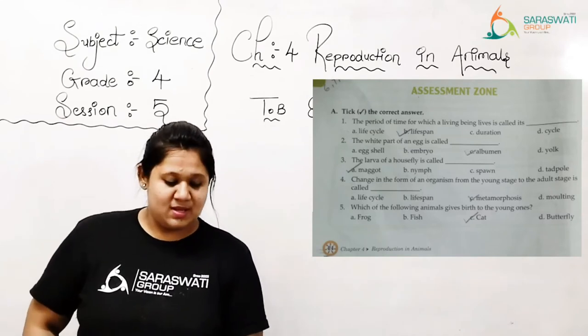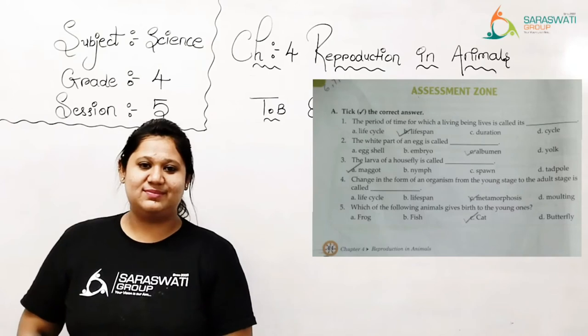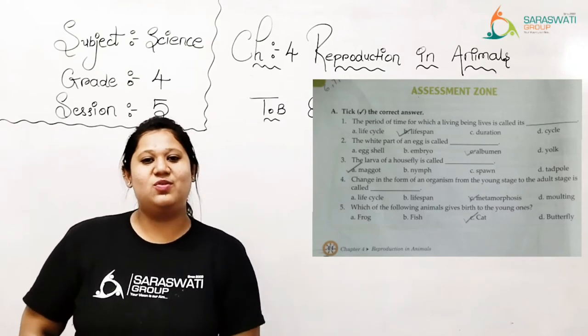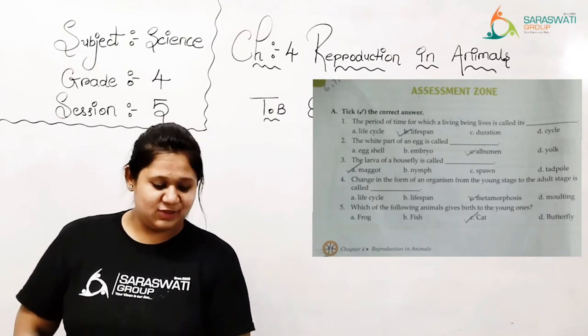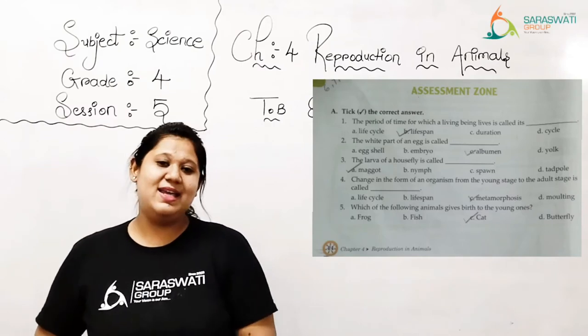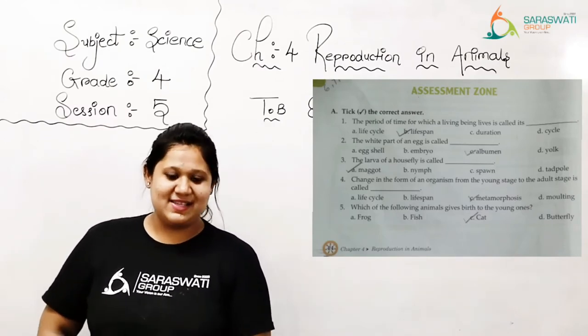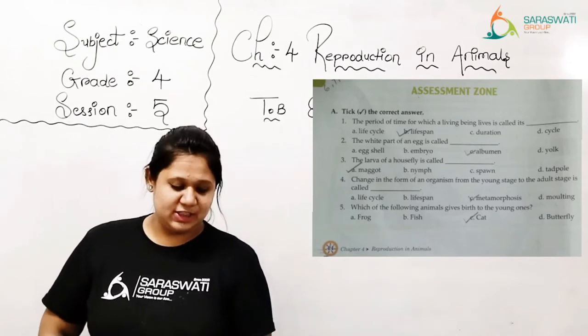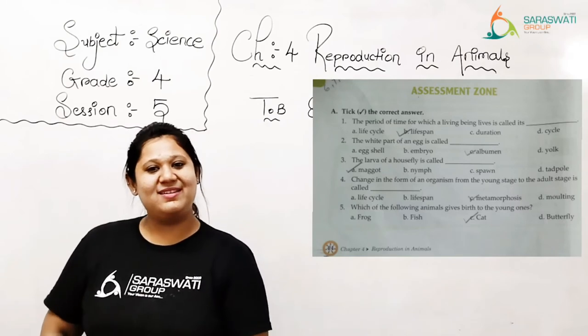Now next, number 2: the white part of an egg is called blank. I think kids, you really know the answer. Still, I am giving you A) egg shell, B) embryo, C) albumen, and D) yolk. Yes, our answer is albumen. The white part of an egg is called albumen. Clear?